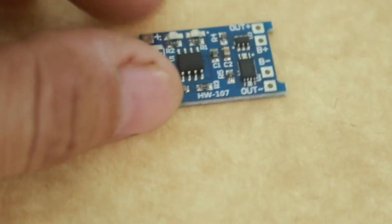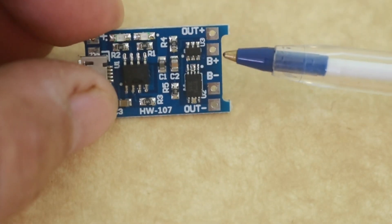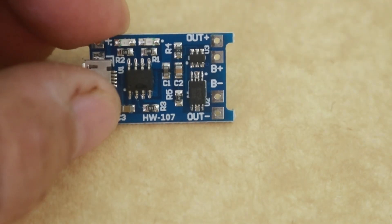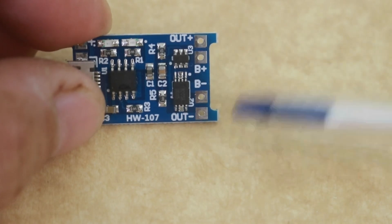To the other side you connect your battery at the terminals B plus and B minus, and the output for your load is at the end terminals out plus and out minus.